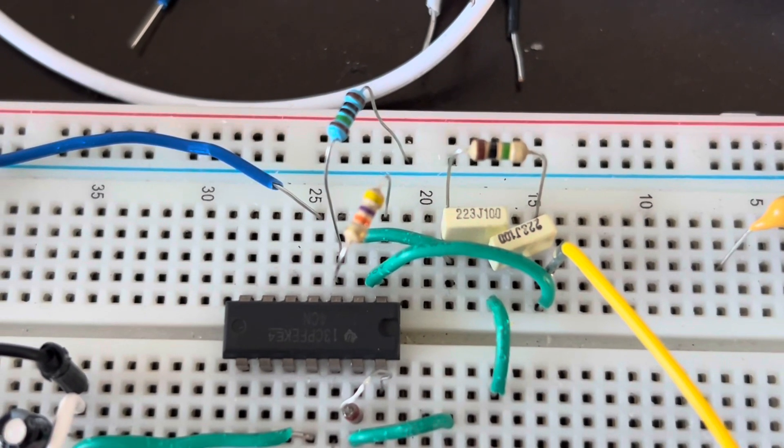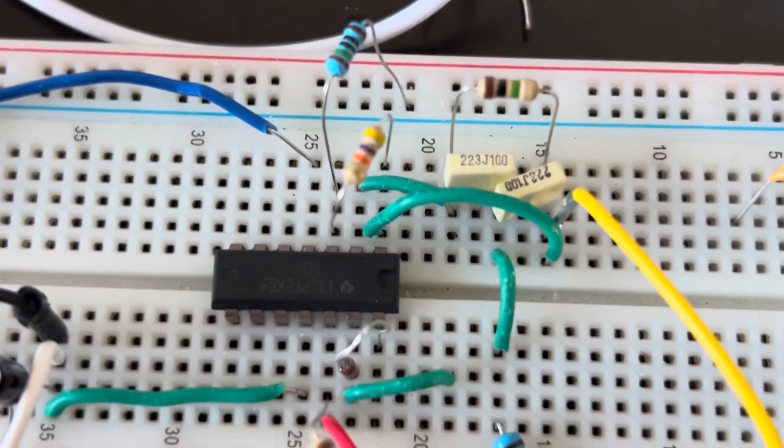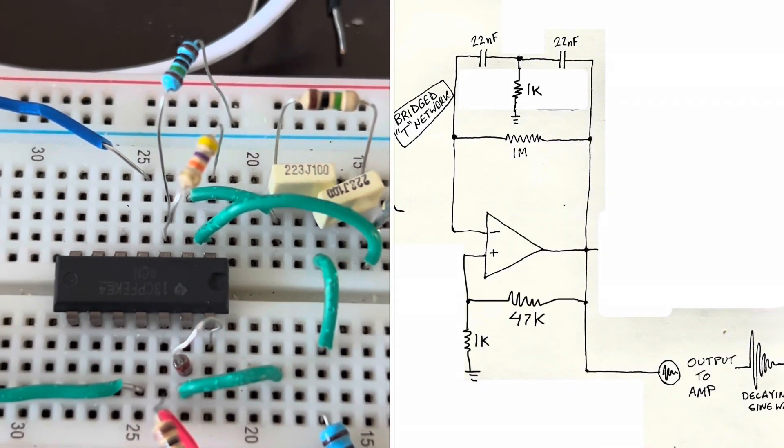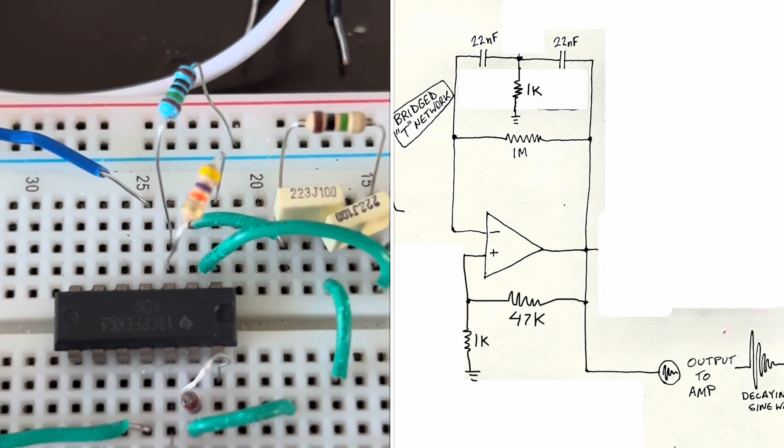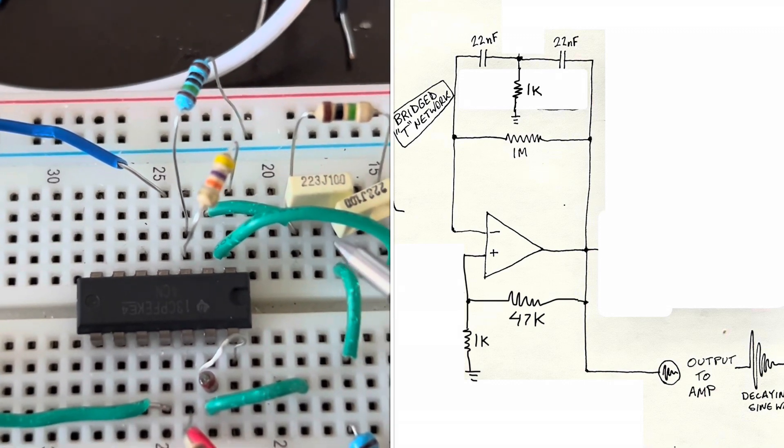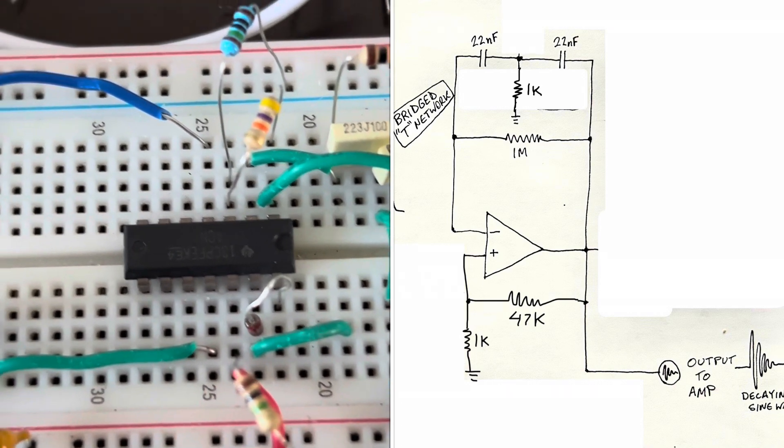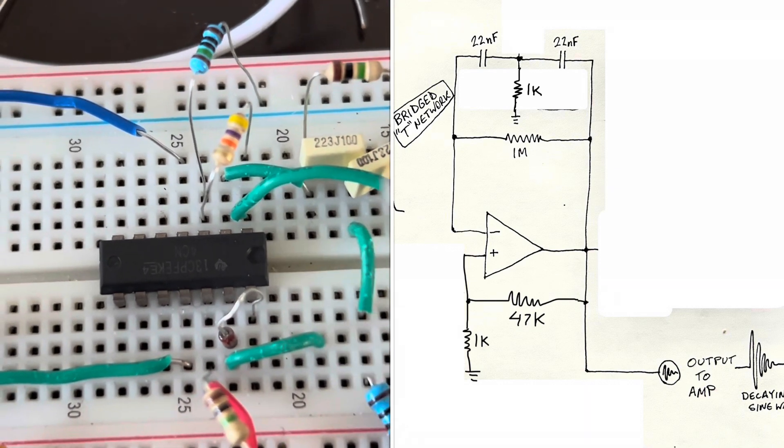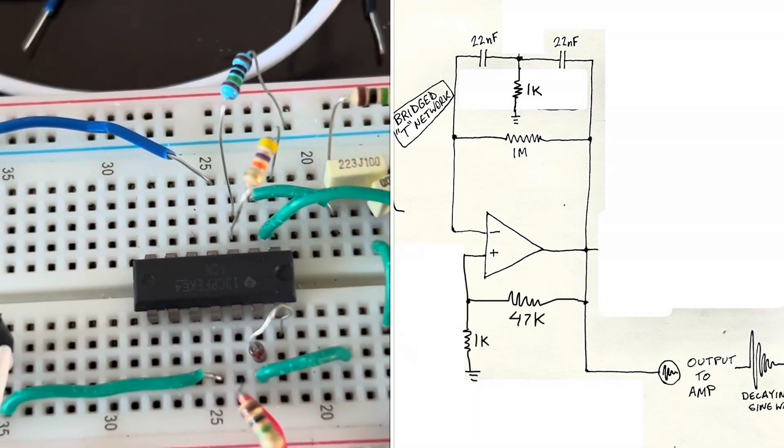So at the core of the kick drum synthesizer circuit, you have this bridged T network. So the basis of the bridge T network is this. Basically, you have two capacitors in series right here. I'm using 22 nanofarad capacitors, and the outsides of them are bridged with a large resistor, one megaohm resistor. And then the other part of the bridge, the T part of it, is a 1k resistor going to ground. And all of that is in the negative feedback loop of an op amp. And it's supposed to generate a sine wave at the frequency determined by this resistor, these two capacitors, and that resistor right there.